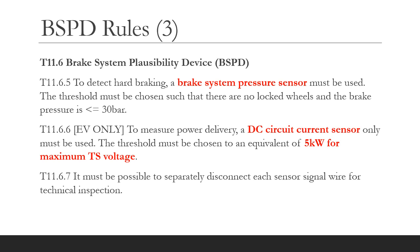To detect hard braking, you must use a pressure sensor. My interpretation is that this can be an analogue sensor or a pressure switch, but I stress that that is my interpretation. The threshold must be set to be lower than that which locks the wheels. As regards measuring power, you actually measure current — the DC current to the inverter or motor controller. You need to calculate an equivalent of 5 kilowatts, and you should perform your calculations at the maximum tractive system voltage so that your calculations are on the cautious side.